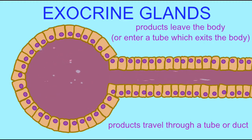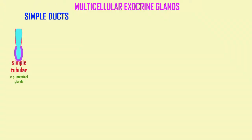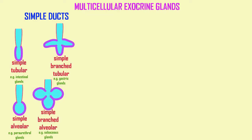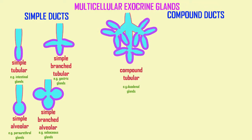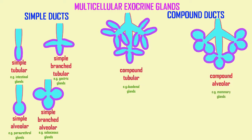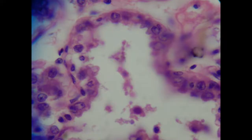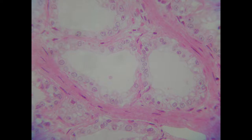Their products leave the body. Structurally, mammary glands are complex. There are simple exocrine glands, but mammary glands, because of the branching of their ducts, are classified as compound alveolar glands, and the cells which produce milk are in circular clusters known as alveoli.